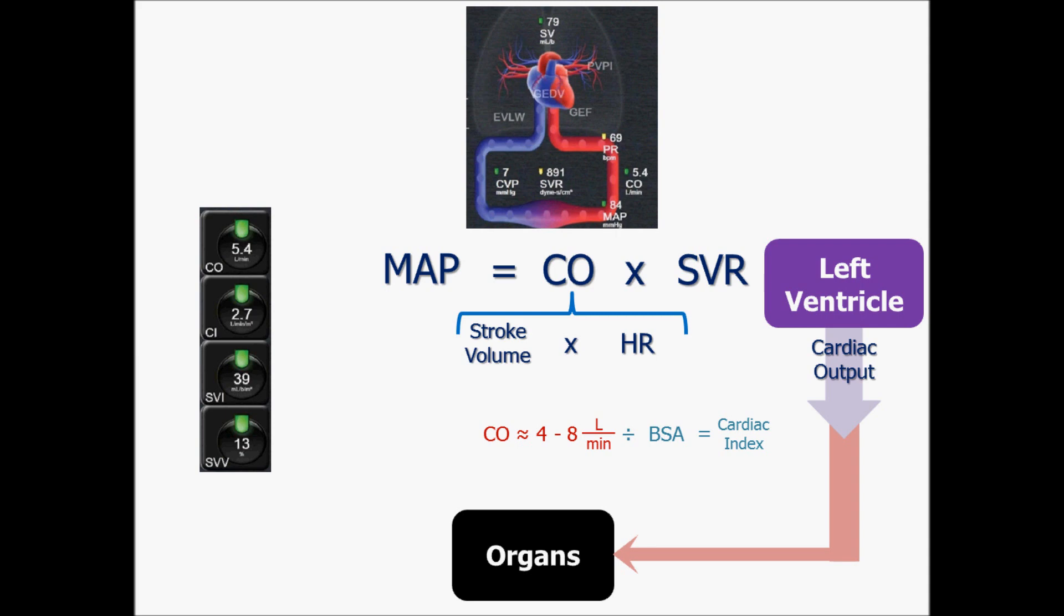Cardiac index normally runs about two and a half to four. And the way I remember this is just start at two and keep doubling. So two to four is cardiac index. And then four, double that to eight. And that gives you your cardiac output.